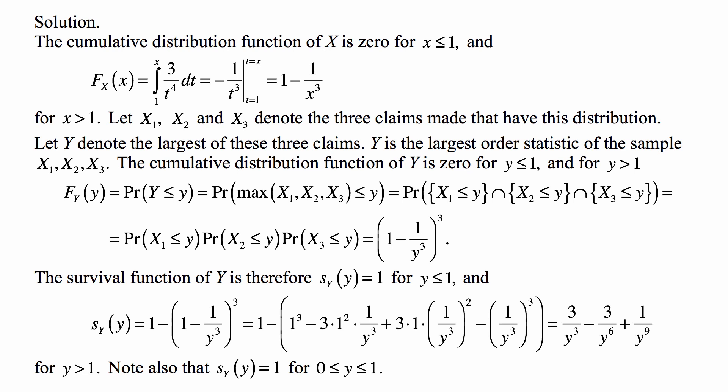Because this is a random sample, they are independent, so the probability of the intersection is a product of probabilities. This gives us the probability that X1 is less than or equal to y, times the probability that X2 is less than or equal to y, times the probability that X3 is less than or equal to y. Based on our CDF calculation, this equals (1 minus 1 over y cubed) cubed.